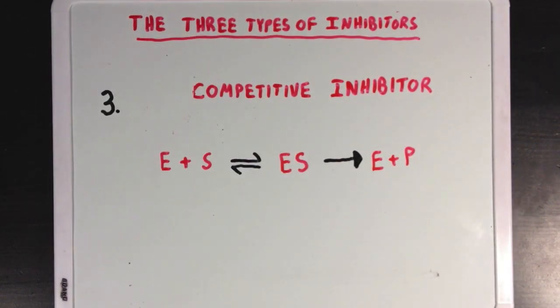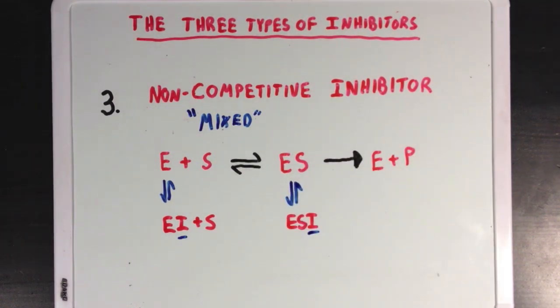Our third type of inhibitor is called a non-competitive inhibitor, which some people call a mixed inhibitor, as it can act as both a competitive or uncompetitive inhibitor. So it can either bind to free enzyme to form EI, or it can bind to the enzyme-substrate complex to form ESI, neither of which can react to form product.